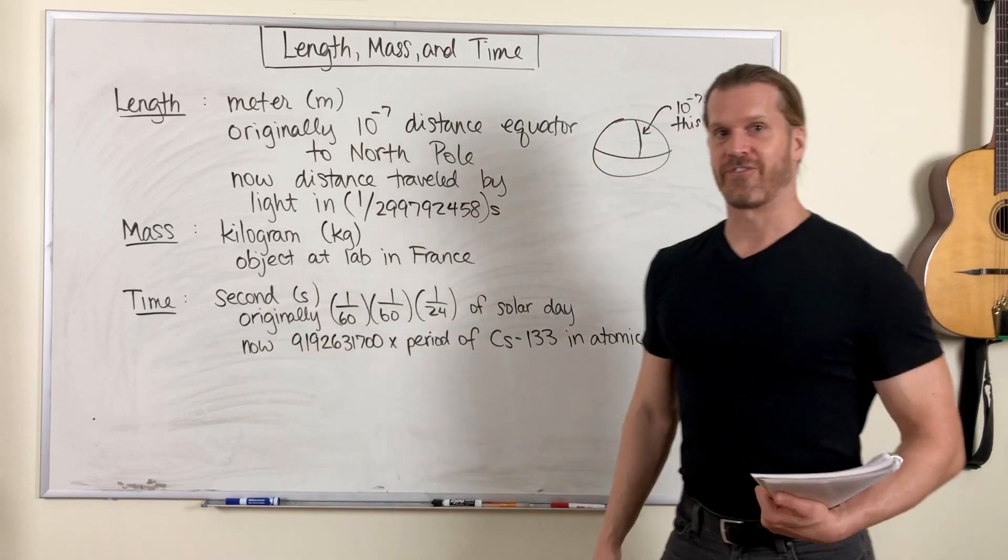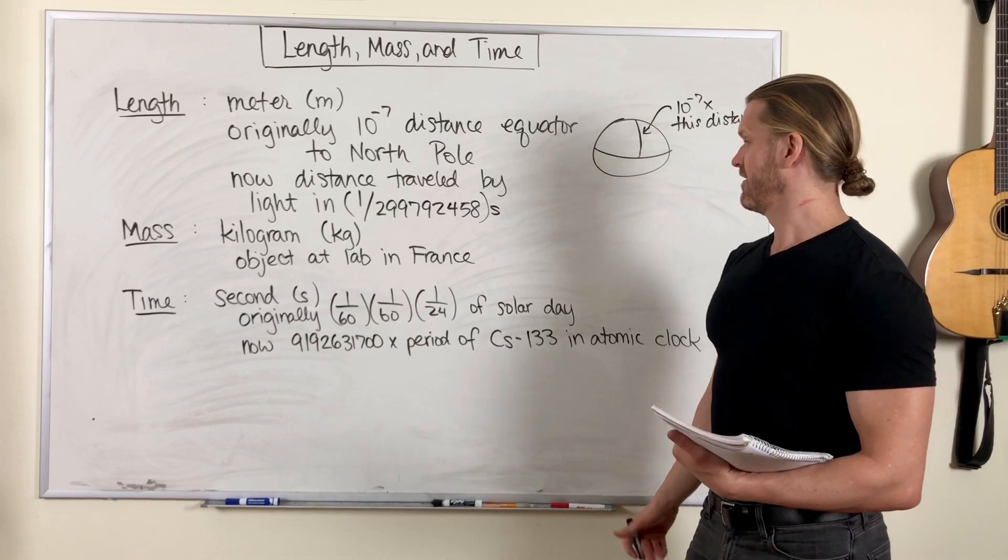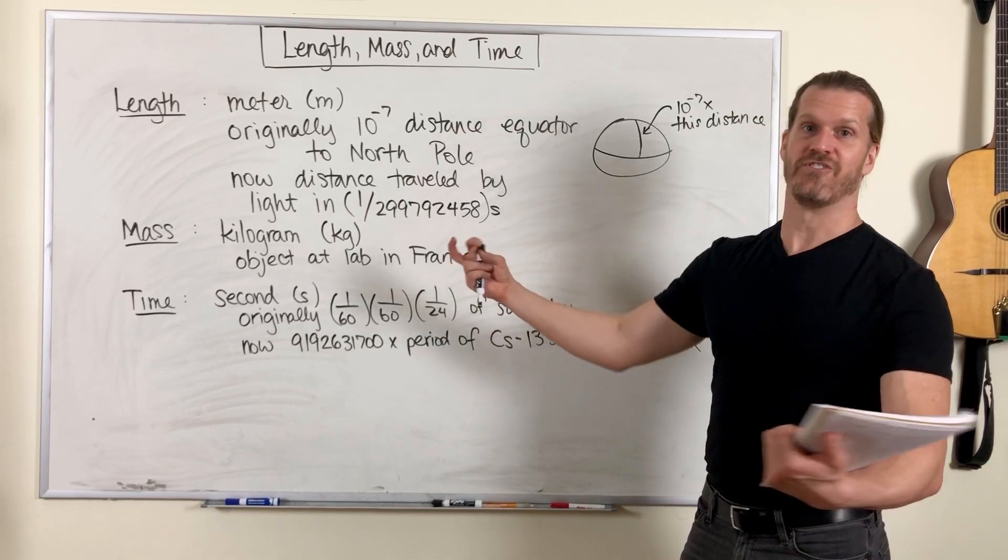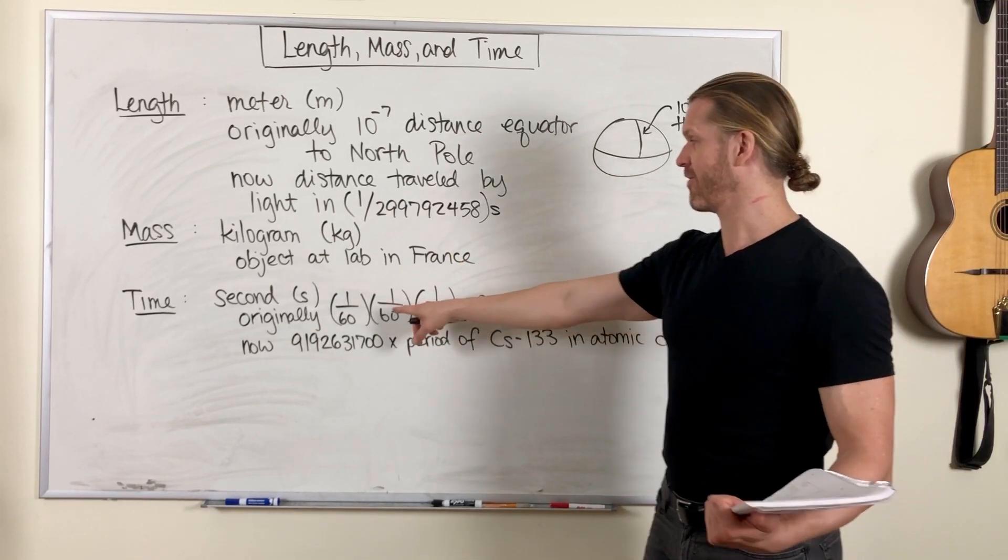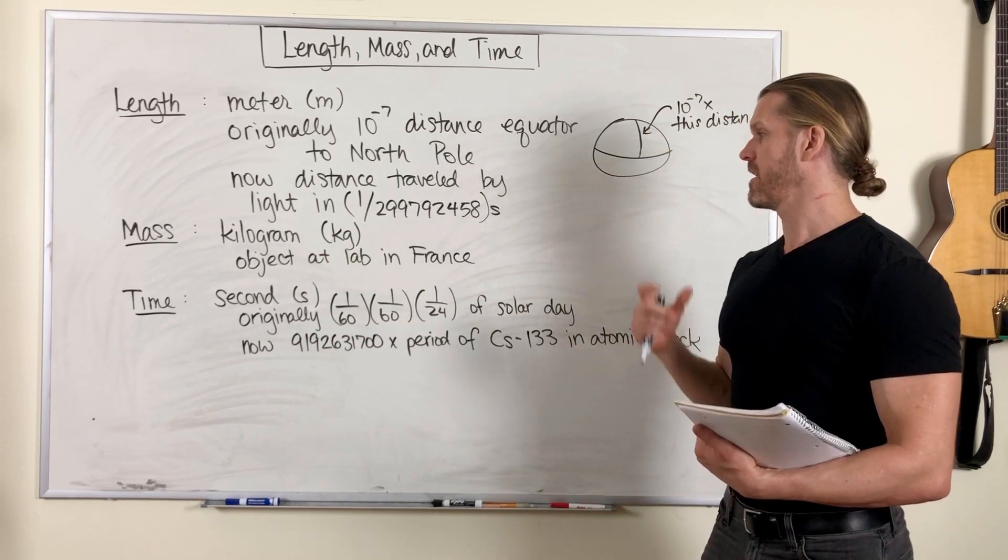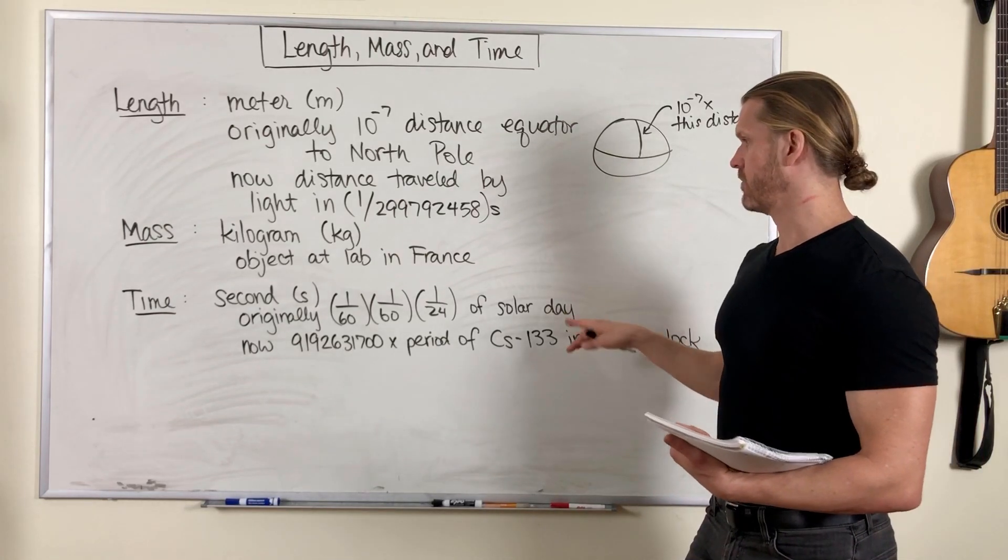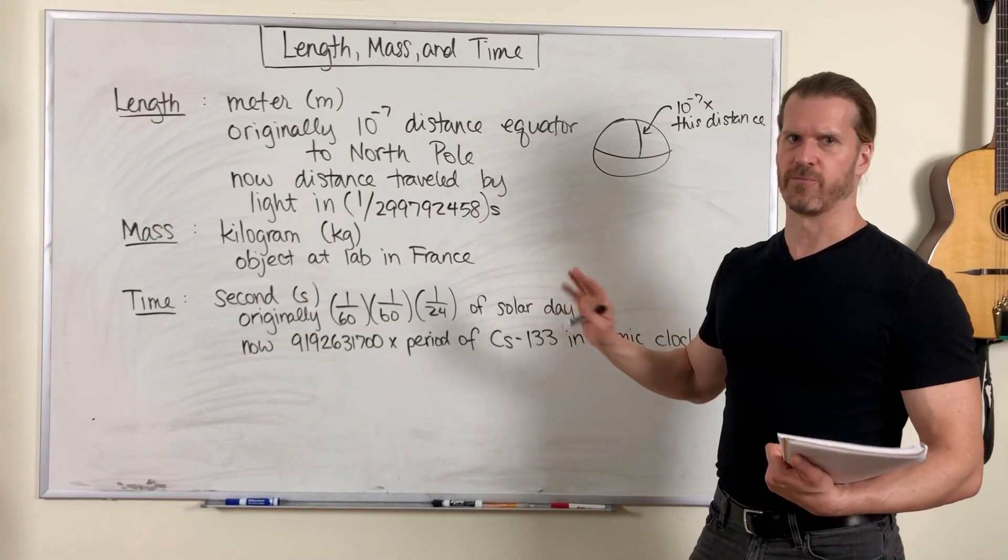Lastly, the unit of time is seconds. A second was originally defined as a day divided by 24 hours, divided by 60 minutes, divided by 60 seconds. And now we can do it more precisely because the definition of a day is a little bit fuzzy.